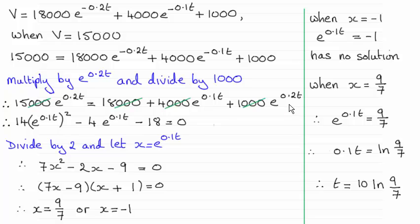So bringing the terms to one side, making it equal to 0, because I could see that I've got a quadratic equation occurring here in e^(0.1t). Remember, e^(0.1t) all squared is going to be e^(0.2t) here.